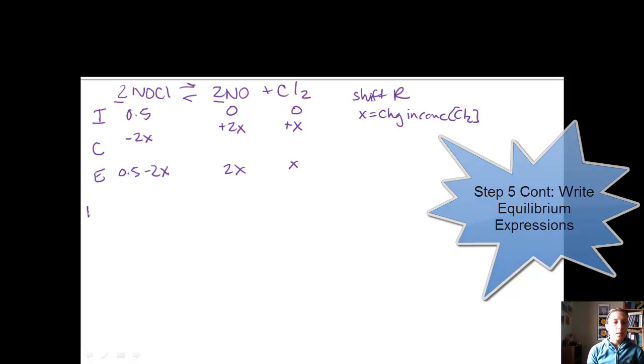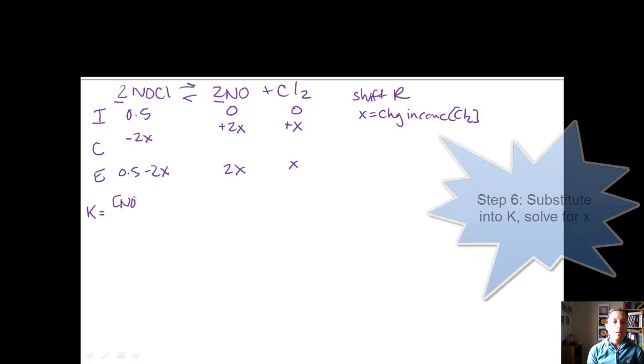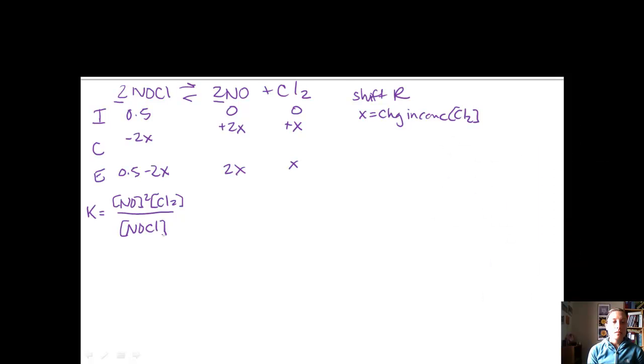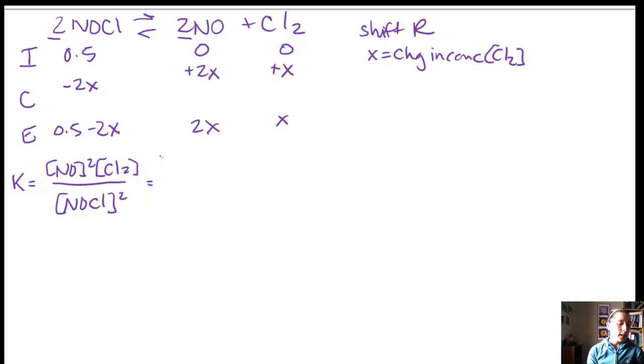So if I write my equilibrium concentration expressions, it's 0.5 minus 2X, 2X, and X. So I can plug that into my K, which is my NO squared Cl2 divided by concentration of NOCl squared. So if I plug all that in, it's going to give me really complicated values. Let's take a look at that. And my bottom is 0.5 minus 2X. And then that has to be squared. If we go through and do all this, we're going to get some X cubed. It's really going to be complicated.